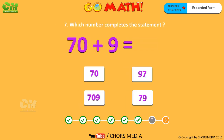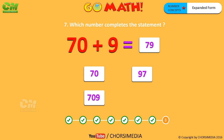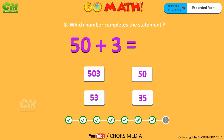Here is another statement: 70 plus 9 equals 79. You are right, the correct answer is 79. Here is another statement: 50 plus 3 equals 53. You are right, the correct answer is 53.